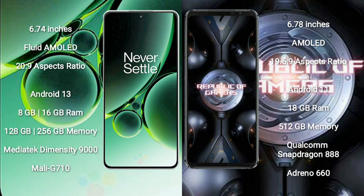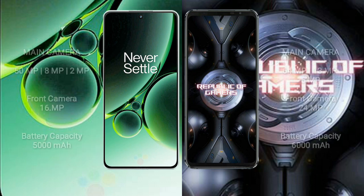ASUS ROG Phone 5 Ultimate comes with 18GB RAM and 512GB internal storage, a Qualcomm Snapdragon 888 processor, and Adreno 660 GPU.